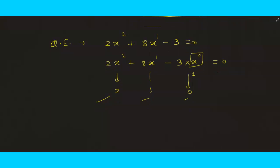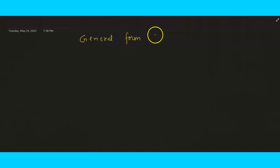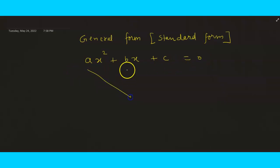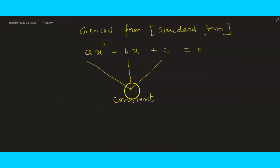Now the standard form — also called the general form — of a quadratic equation is ax² plus bx plus c equals 0. Do not forget to write the equal sign. Here a, b, and c are letters of the alphabet and are constants, sometimes called coefficients.